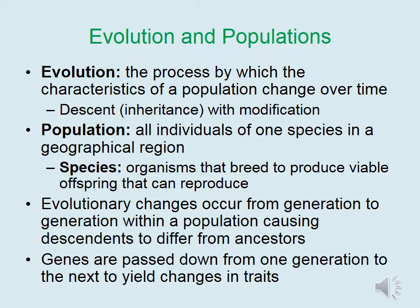A species refers to organisms that breed to produce viable offspring that can also reproduce. For instance, a donkey and a horse are closely enough related species that they can breed to produce a mule. However, a mule is always sterile, meaning it cannot reproduce. This is what keeps a donkey and a horse as separate species.